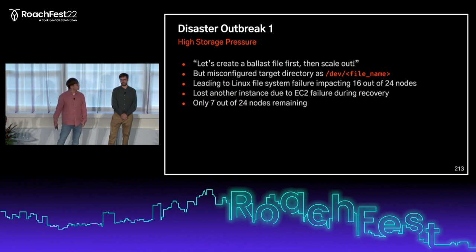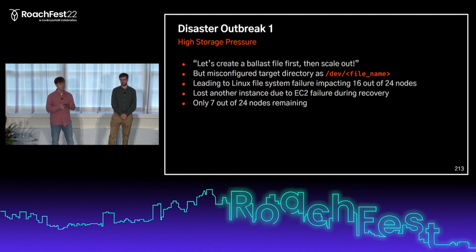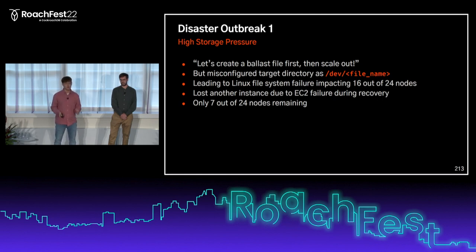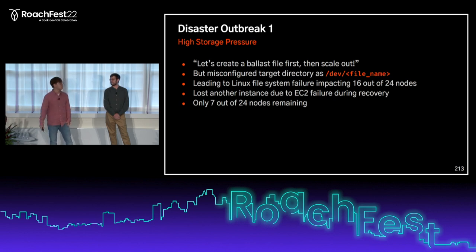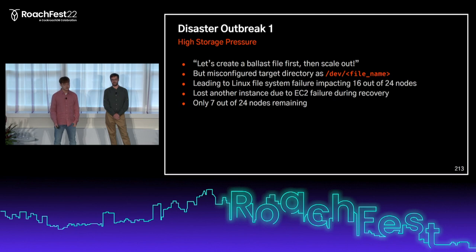We decided to scale out, but first decided to create a blast file — basically an empty chunk of a file you can delete when the disk is full so you can continue using the machine. But we had an operator mistake: we misconfigured the target directory as /dev/filename. A team member had been working overtime for several weeks already, so it was just a human mistake that can happen. This led to a serious Linux file system failure which, by bad luck, impacted 16 out of 24 total nodes.